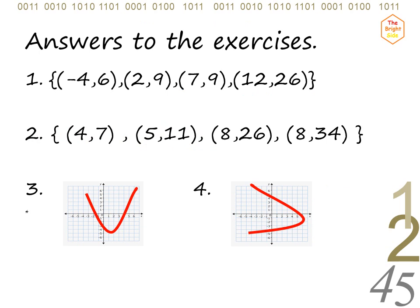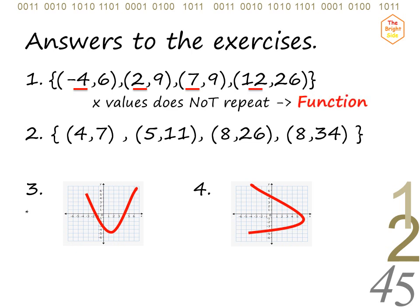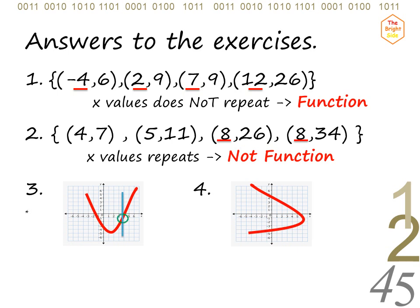Here is the summary of the answers to the four exercises. If the x values do not repeat, it is a function. If the x value repeats, it is not a function. If there is only one point of intersection, it is a function. If there are two or more points of intersection, it is not a function.